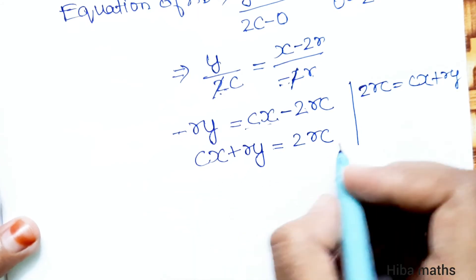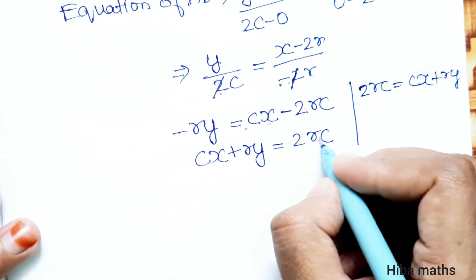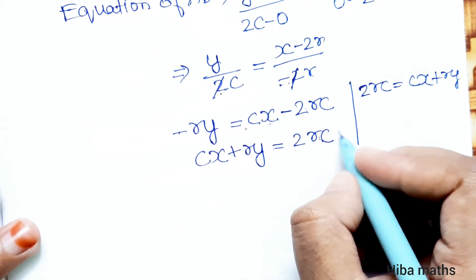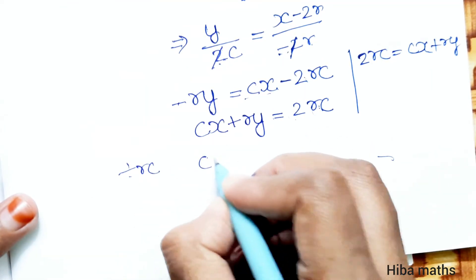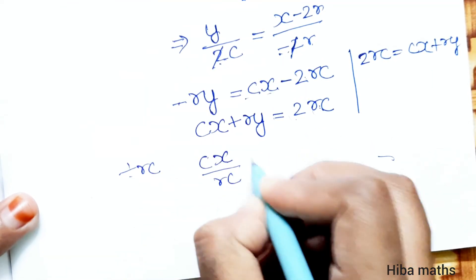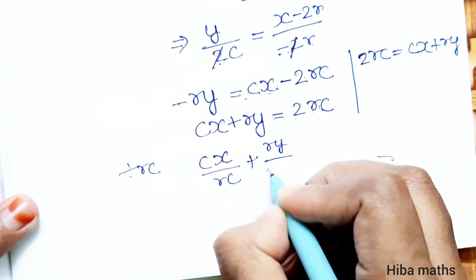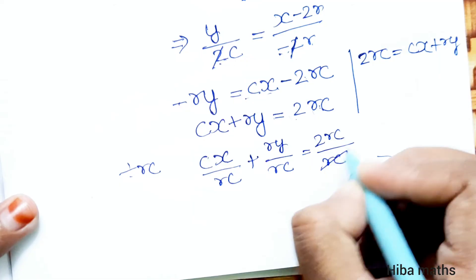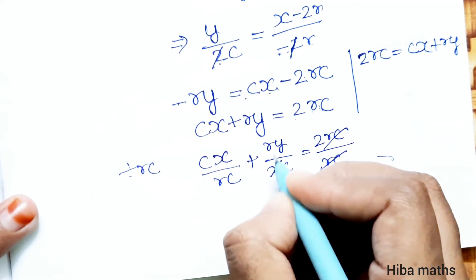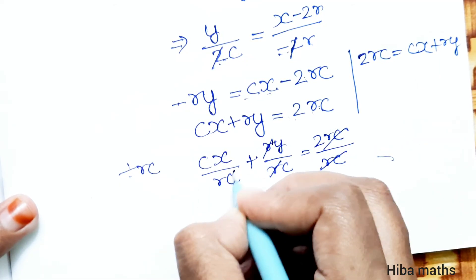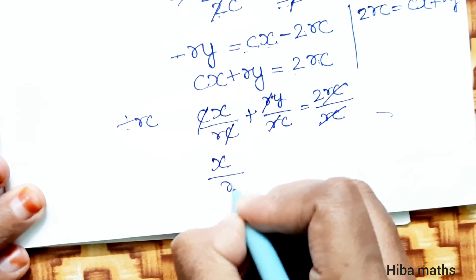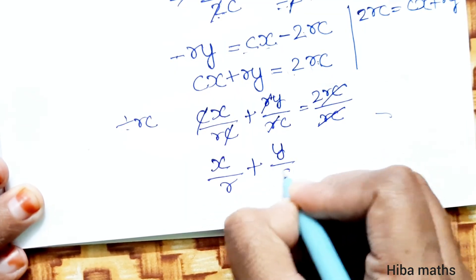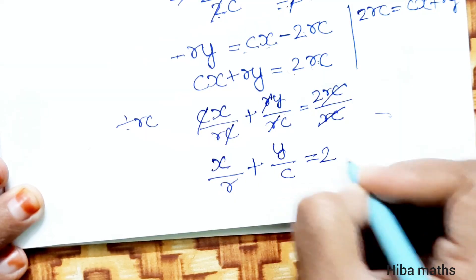Dividing by rc: cx by rc plus ry by rc equals 2rc by rc. The terms cancel: r cancels, c cancels. So x by r plus y by c equals 2.